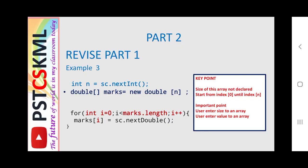The third example: we don't know the size of the array, and we also don't know the values. First, we declare double marks[] = new double[n], where n is an unknown variable. The user must first enter the size of the array: int n = sc.nextInt(). Then we declare marks = new double[n]. For example, if the user enters 3, the array stores from index 0 until index 2.